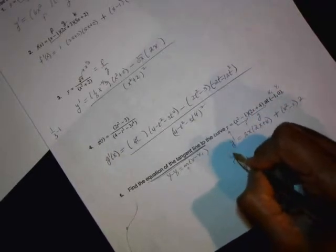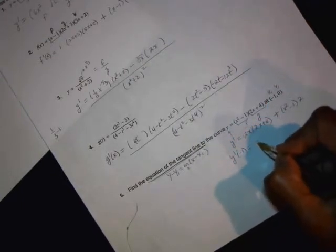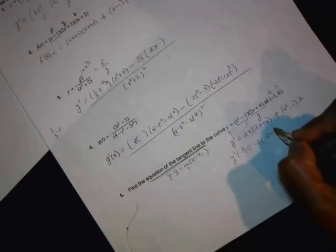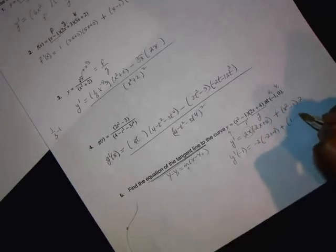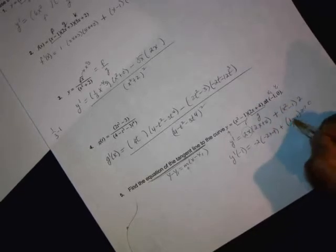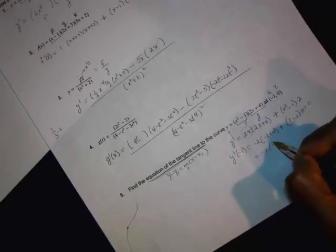Now, we'll find y prime at negative 1. Plug in negative 1 for x and that becomes negative 2. That's negative 2 plus 4. When you plug in negative 1 there, it becomes 1 because negative 1 squared is positive. So, that wipes out this entire term. That goes to 0 because of 1 minus 1.